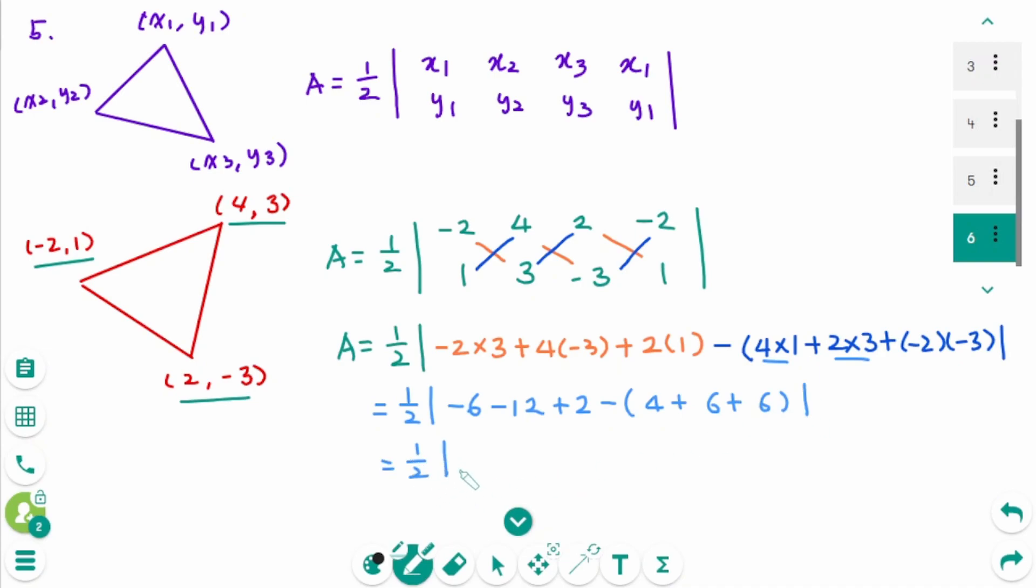Equals 1 over 2, absolute value sign, minus 32, equals 1 over 2 times 32, the final answer is 16.